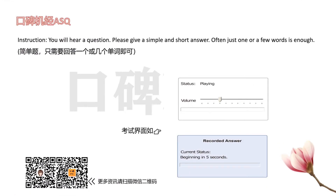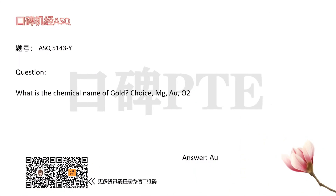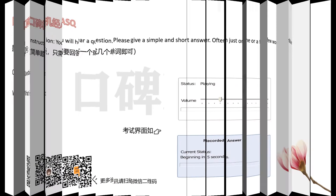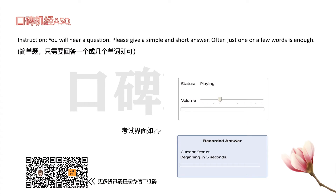What is the chemical name of gold? Agriculture is a process which can be realized by...